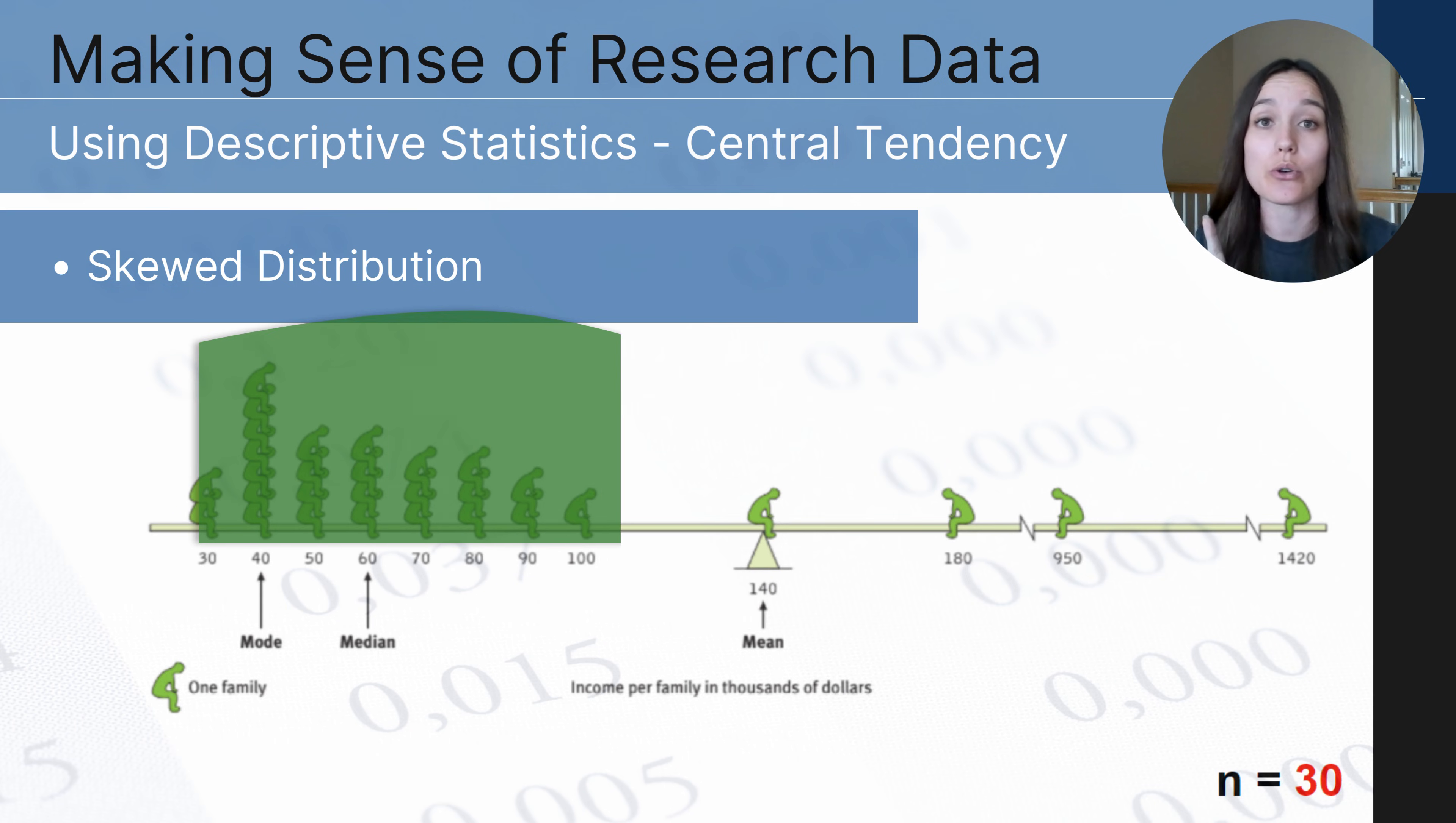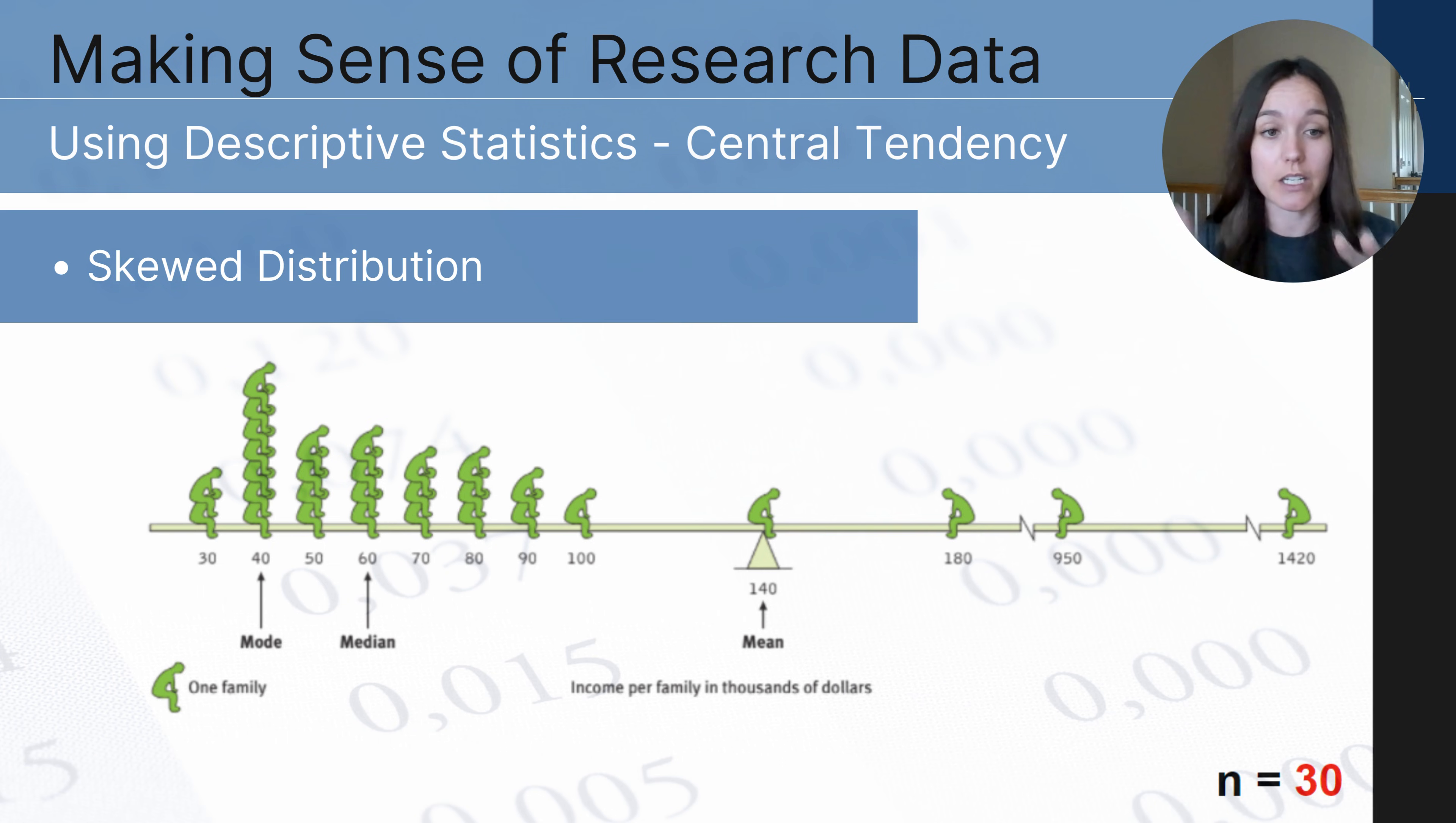And this is what we call a skewed distribution where the mean, median, and mode are not falling around the same number in the center of the data set. And this has occurred because in these family incomes we have some that are making considerably more money than the rest of the people in the city.